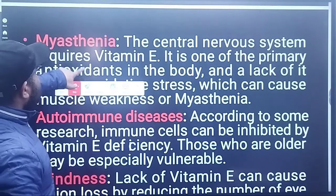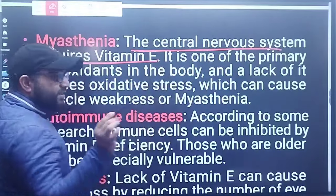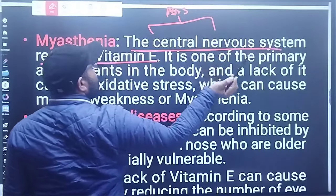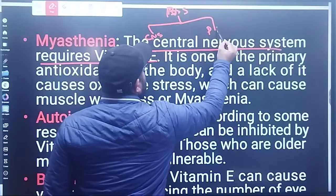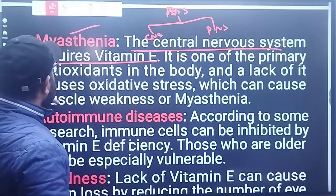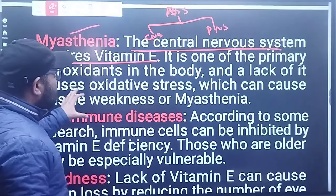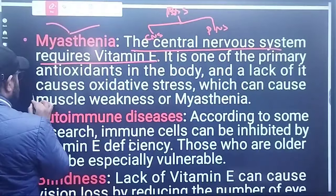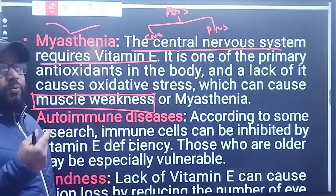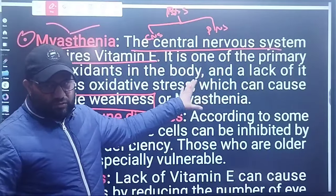Another condition is myasthenia. The central nervous system requires Vitamin E — it is one of the primary antioxidants in the body. A lack of it causes oxidative stress, which can cause muscle weakness. Myasthenia means muscles become weak due to lack of Vitamin E, causing oxidative stress in the central nervous system.